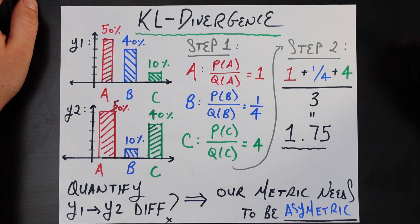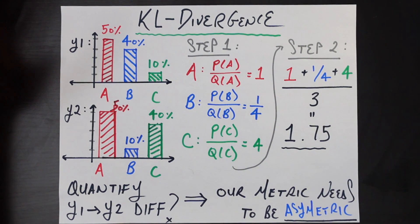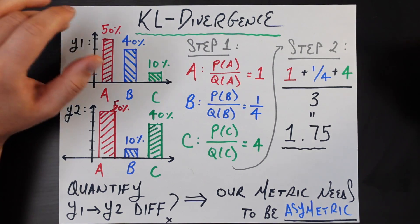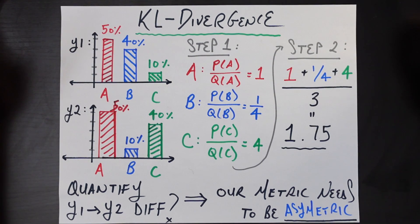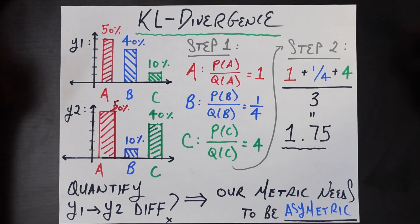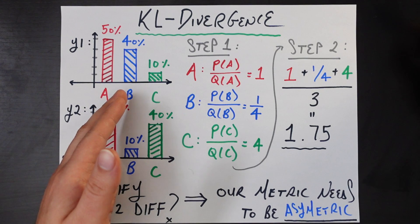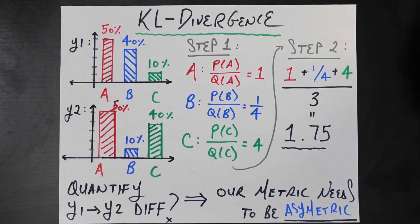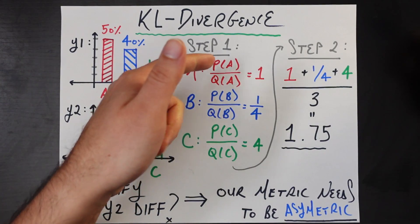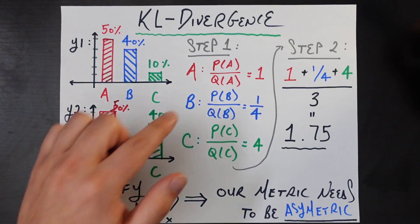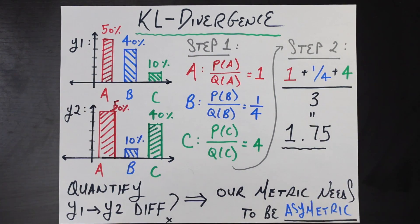Now let's get into the construction process. If you were asked to come up with this metric from scratch, how would we start? Here's one possible way — and the keyword is 'possible.' A possible first step: I see an A, B, and C in each distribution, so let me measure the ratio P/Q for each fruit between the two years. I'll use notation P and Q, where Q is the reference distribution — the basis against which you compare change — which for us is year one, making year two the P distribution.